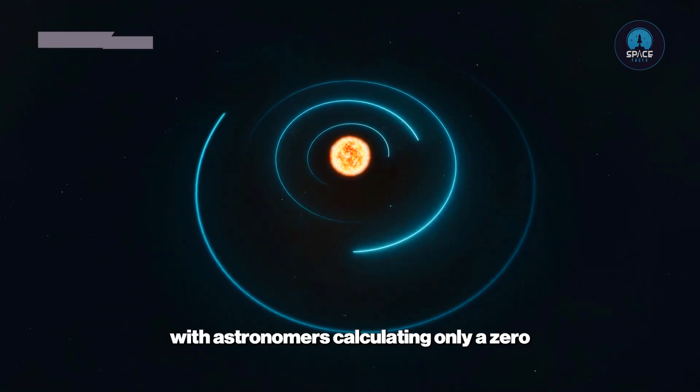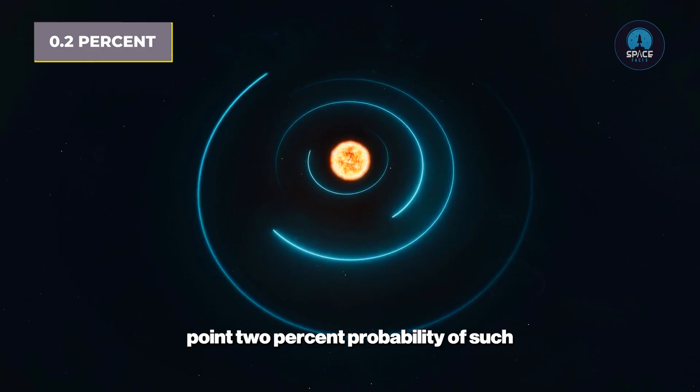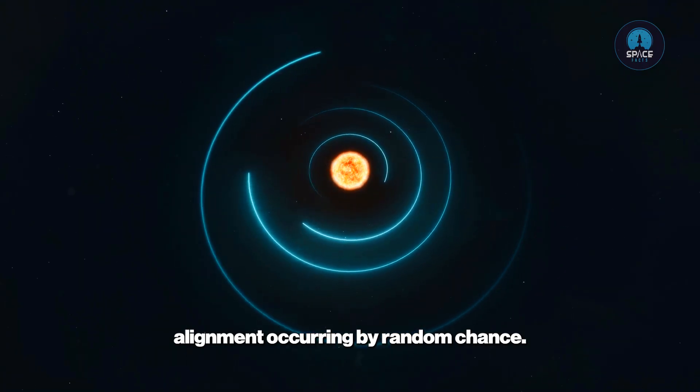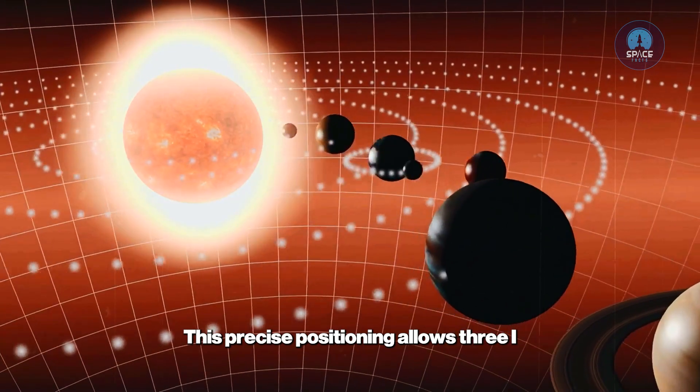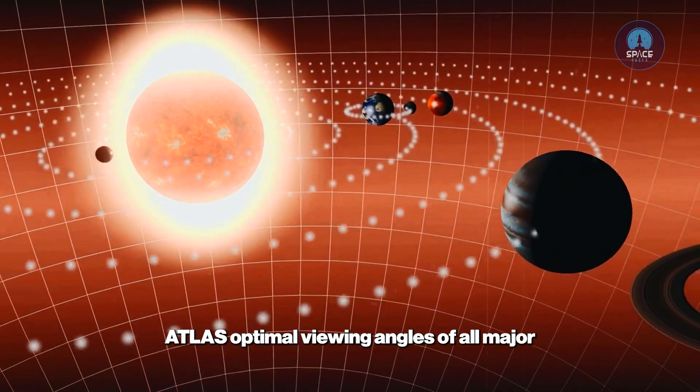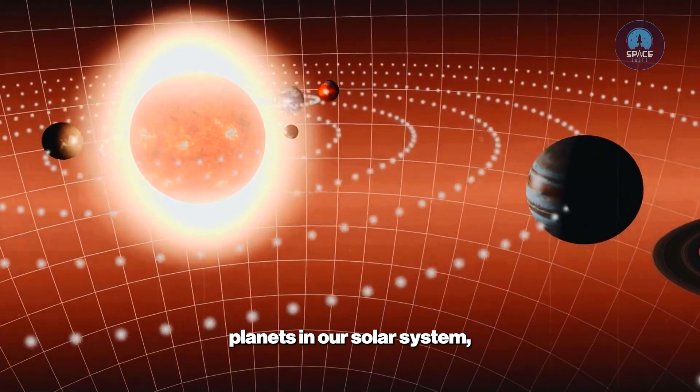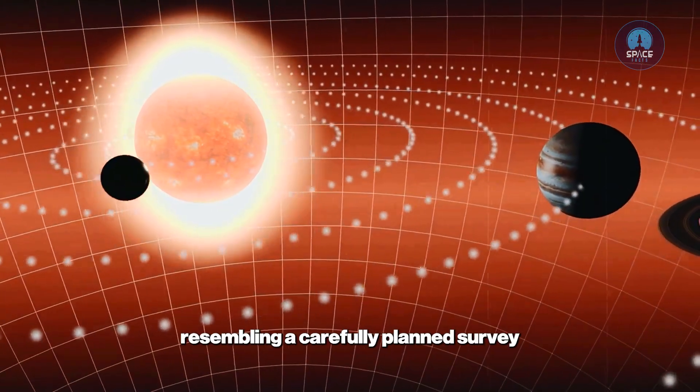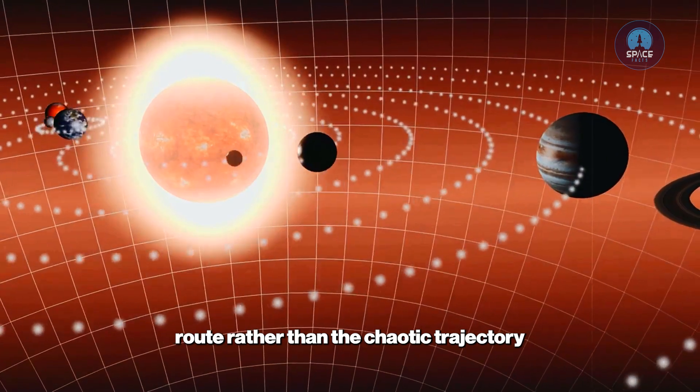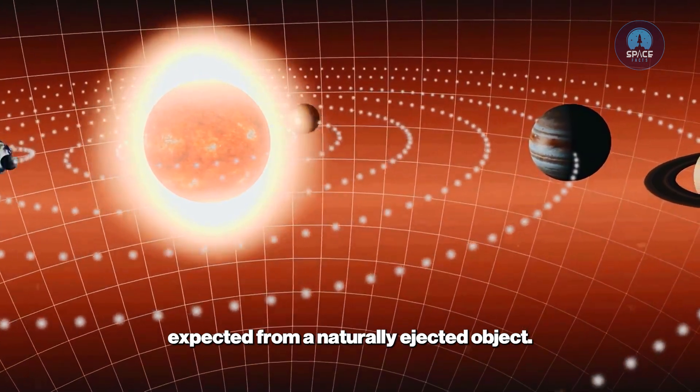with astronomers calculating only a 0.2% probability of such alignment occurring by random chance. This precise positioning allows 3I-Atlas optimal viewing angles of all major planets in our solar system, resembling a carefully planned survey route rather than the chaotic trajectory expected from a naturally ejected object.